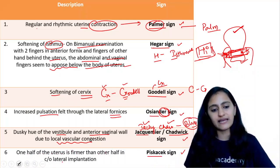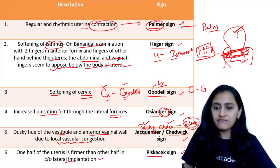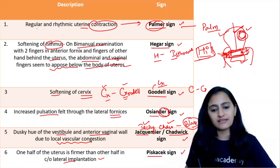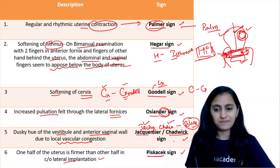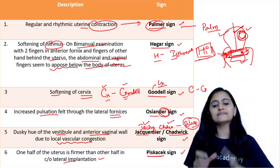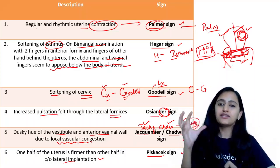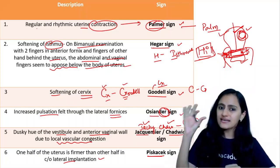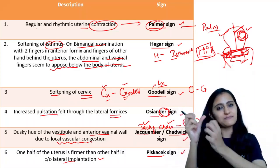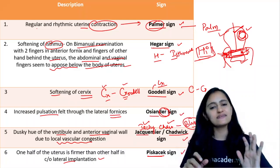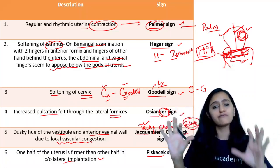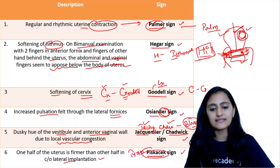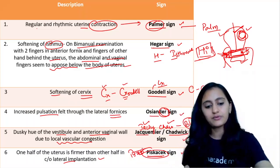Then is Piskacek sign — one half of the uterus is firmer than the other half in cases of lateral implantation. If there is lateral implantation, one side is soft and the other side is firm. This is Piskacek sign. To remember it: with lateral implantation, the uterus 'pichak jata hai' (deflates/collapses) on one side — Piskacek, pichak. So one side is soft (pichak), the other side is firm — that is your Piskacek sign.